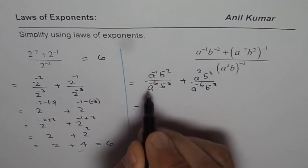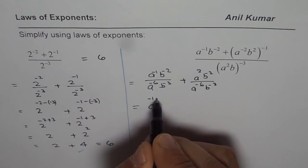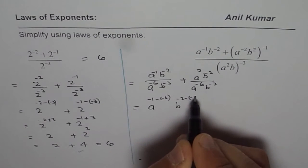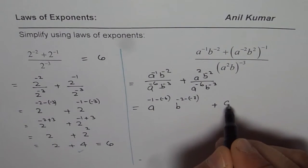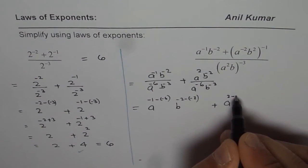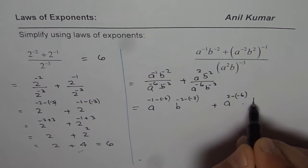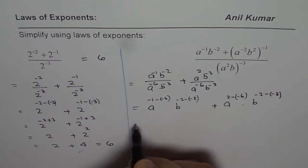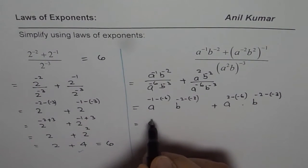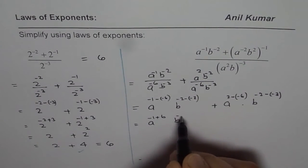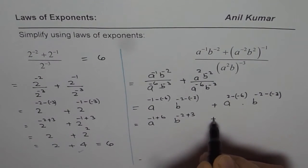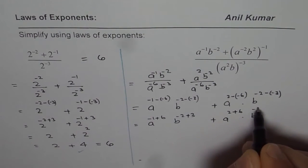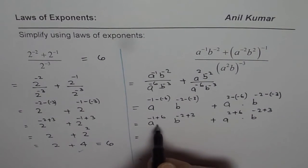For the base A in the first term: minus 1 minus of minus 6. For B: minus 2 minus of minus 3. For the second term: A squared minus of minus 6, times B to the power of minus 2 minus of minus 3. Writing this out: A to the power of minus 1 plus 6, B to the power of minus 2 plus 3, plus A to the power of 2 plus 6, times B to the power of minus 2 plus 3.